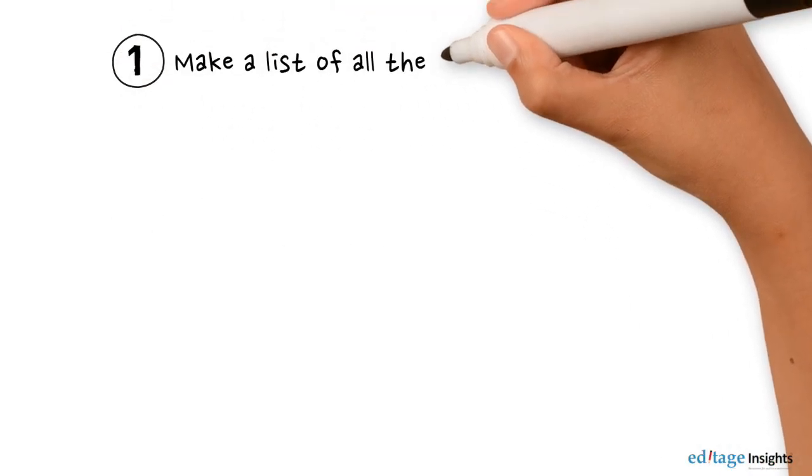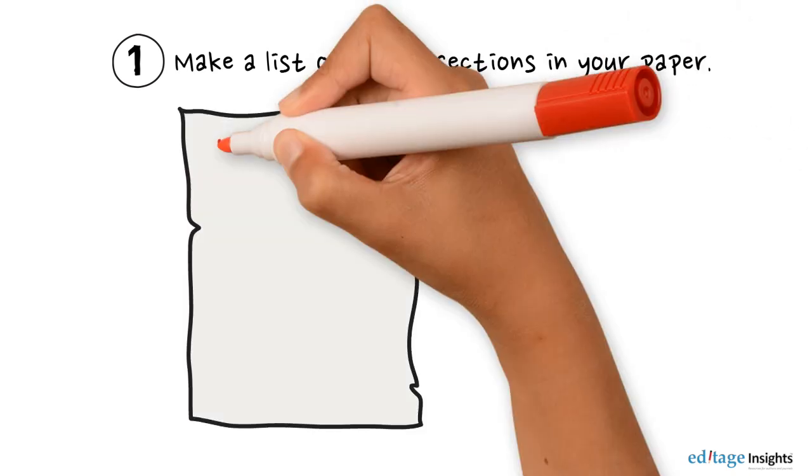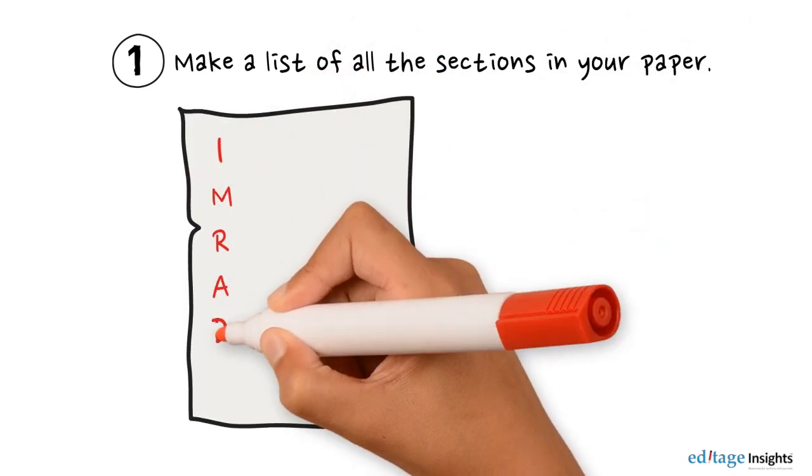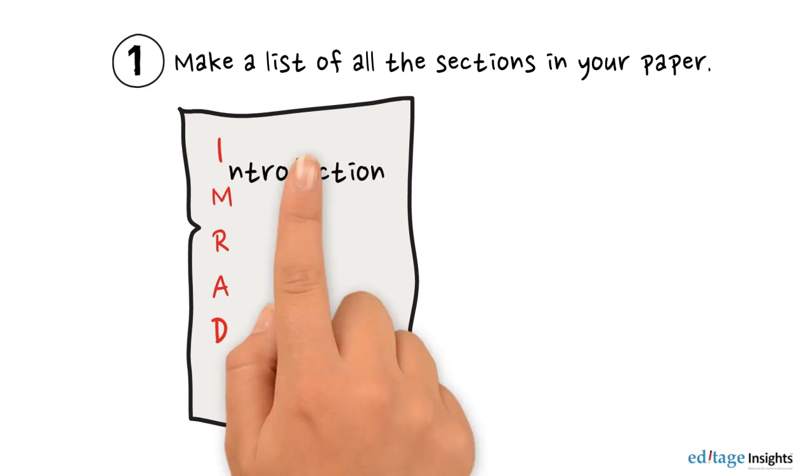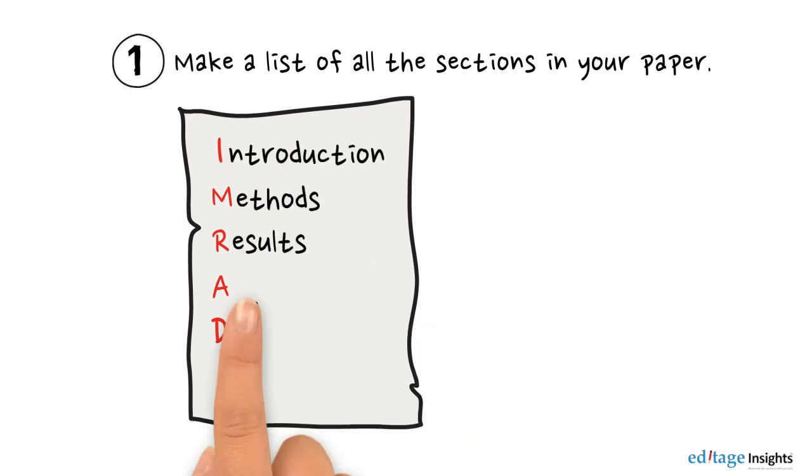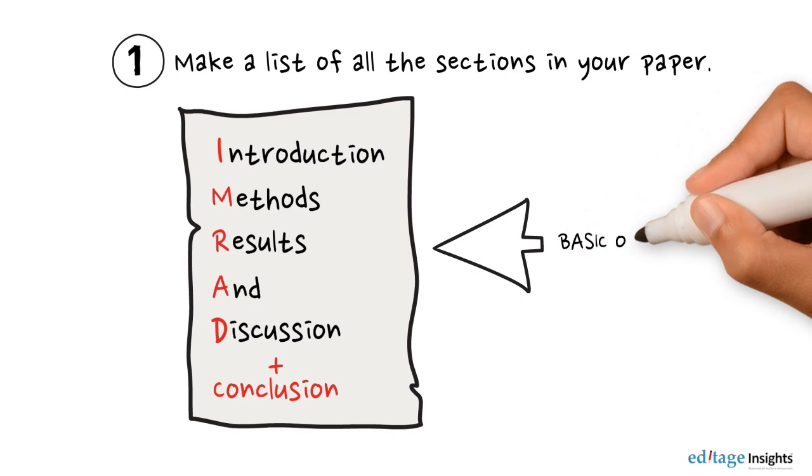First, make a list of all the sections in your paper. Your research paper should follow the MRAD format and must include an introduction, methods, results and discussion, and conclusion. This is the basic outline for your research paper.